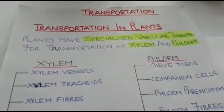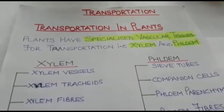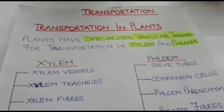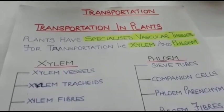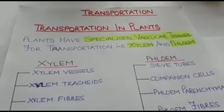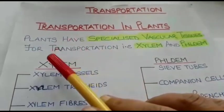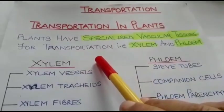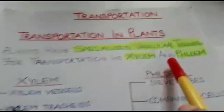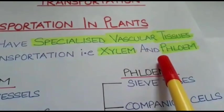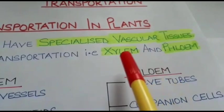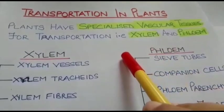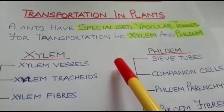In today's video we would learn about the third life process, that is transportation — and to be specific, transportation in plants. Students, we have already learnt in class 9th that plants have specialized vascular tissue for transportation, and these two specialized vascular tissues are xylem and phloem. Both xylem and phloem are complex permanent tissues, as they are made up of more than one type of cells.